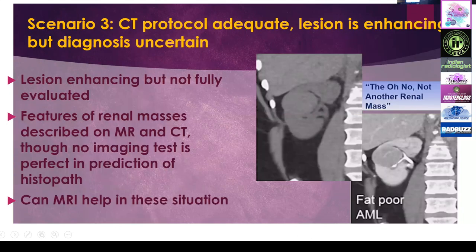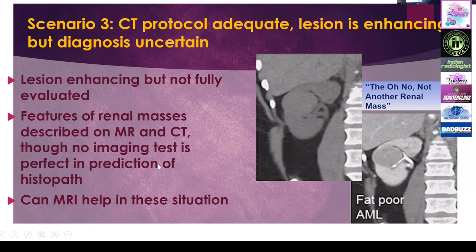Scenario three: The CT protocol is adequate and the lesion is enhancing, but diagnosis is uncertain. In this example of a fat-poor AML, based on multiple sequences, enhancement pattern, diffusion-weighted images, and in and out of phase images, MRI can characterize many of these lesions.